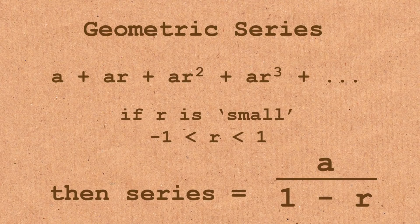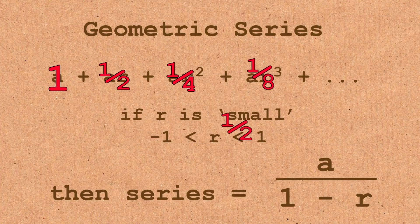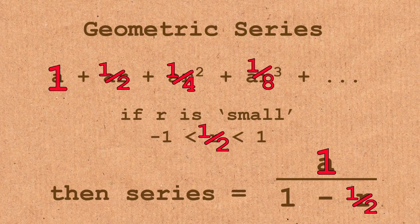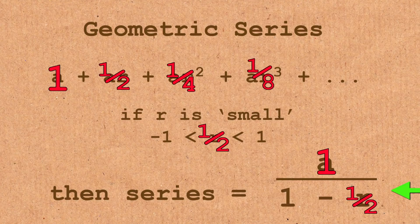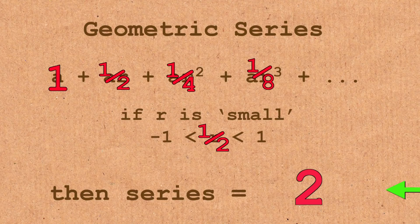And so we can double check our previous result here for the first row. In our situation, the first term was one and the ratio was one half. And what do we get according to the formula? One over one minus a half. One over one half, which is our two.